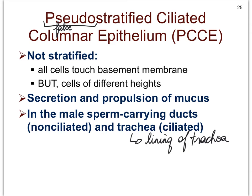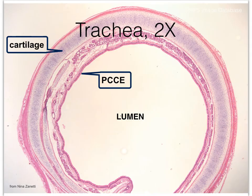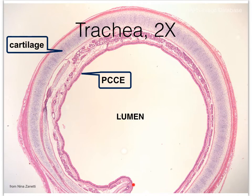The location you definitely need to know is the trachea — that's where we find the ciliated version of PCCE. We see some non-ciliated version in some of the sperm-carrying ducts in the male, as you'll learn about in A&P 2. For PCCE, if you know it forms the lining of our trachea — which is our windpipe — that is sufficient at this point.